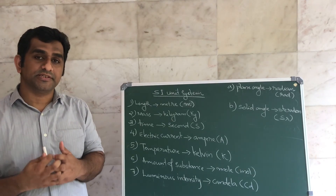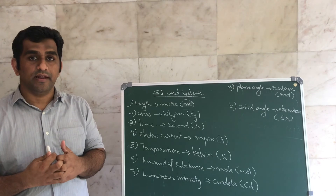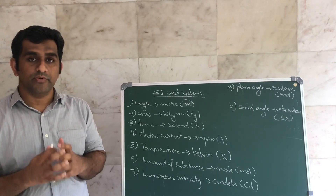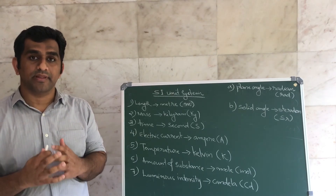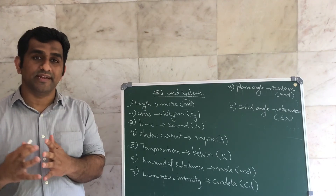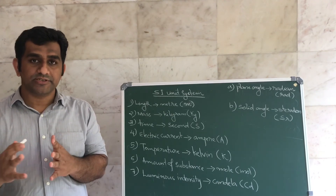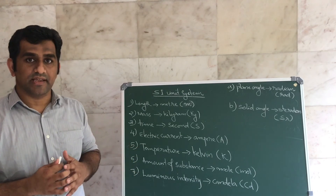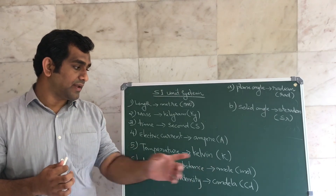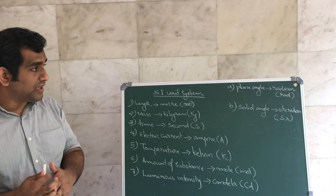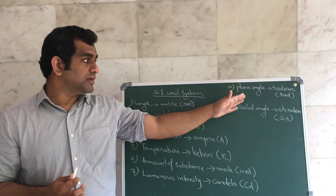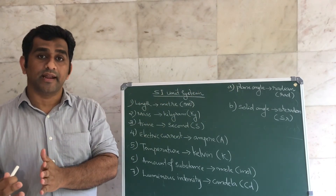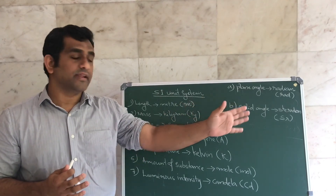Luminous intensity is related to the light emitted by a source in a given direction. We may not need to memorize its full definition, but what matters is knowing its unit is candela. There are two supplementary units: plane angle with unit radian, and solid angle with unit steradian.